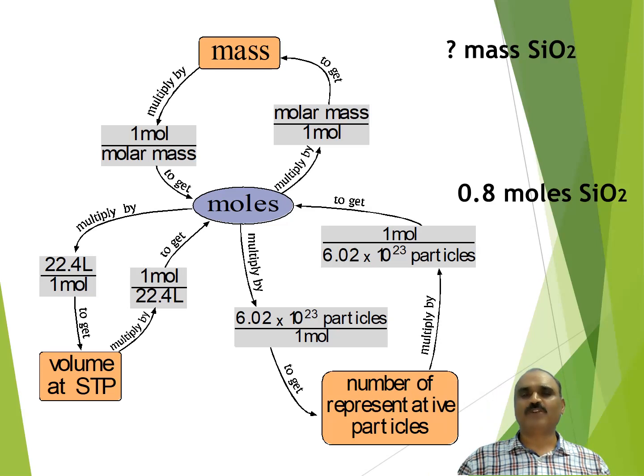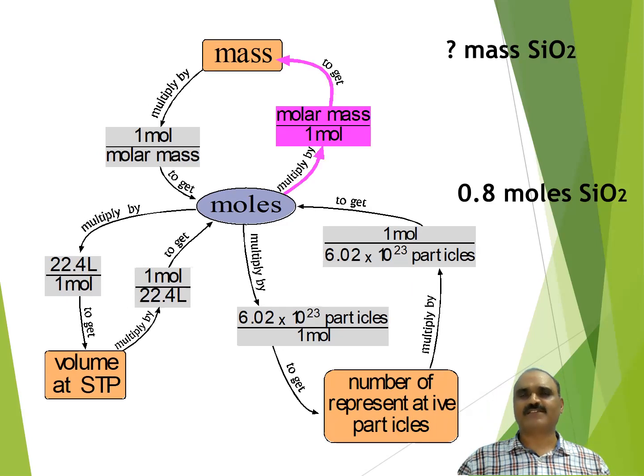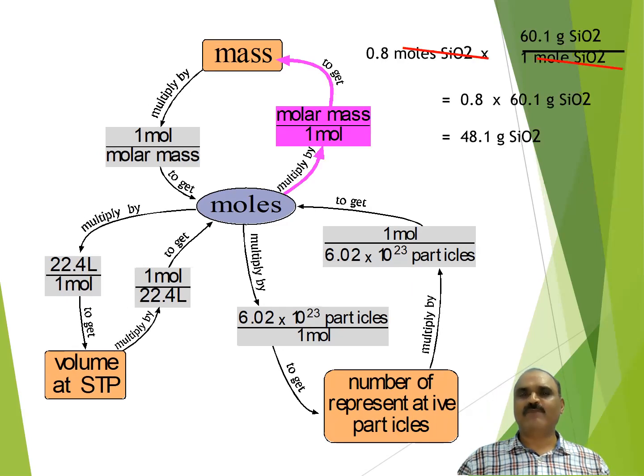We shall multiply by molar mass of SiO2 upon one mole. See here, you can calculate simply by multiplying like this. 0.8 moles of silicon dioxide multiply 60.1 gram silicon dioxide upon one mole silicon dioxide. 60.1 is molar mass of SiO2. Now moles, moles are cancelled out. You see here, moles of SiO2, moles of SiO2. What remains is gram? 60.1 into 0.8. The answer will be 48.1 gram of silicon dioxide.